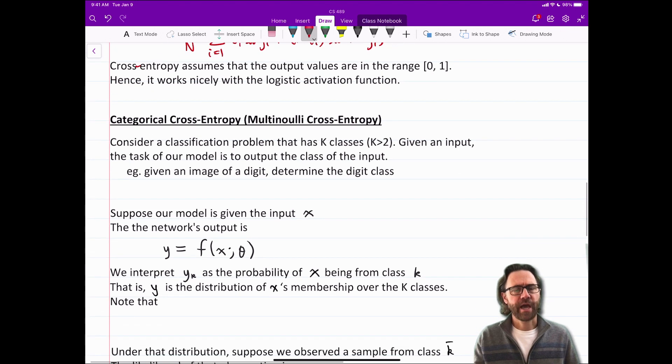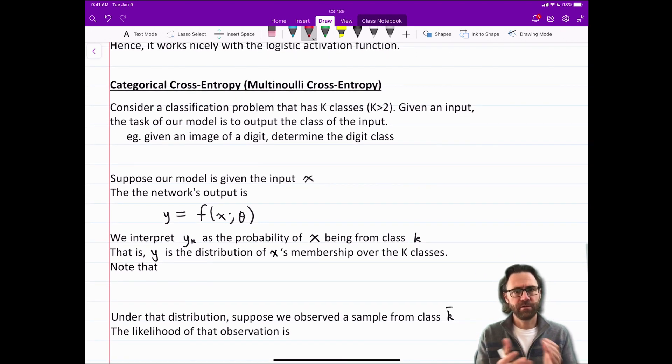Okay the last one I want to talk about is categorical cross entropy or sometimes called multinomially cross entropy or multinomial cross entropy. So now it's not just two classes. Now we have K classes where K is bigger than two. Consider classification problem that has K classes. Given an input the task of our model is to output the class of the input or estimate the class of the input. So for example given an input of an image of a digit we want to determine the digit class. Given a picture of a four we want to determine that it's class four and of course there are ten different digit classes.